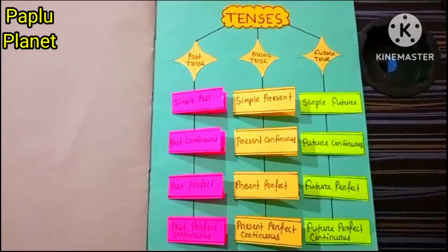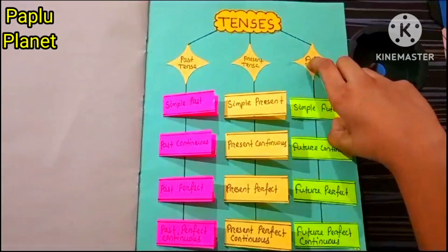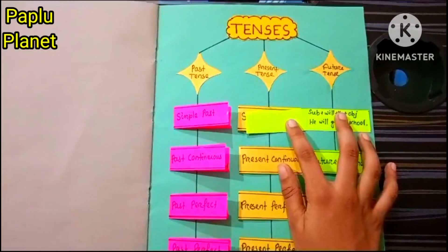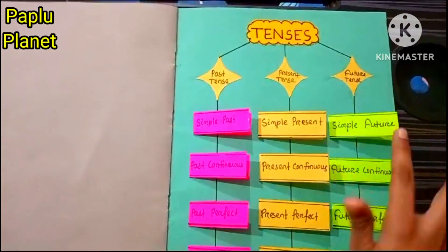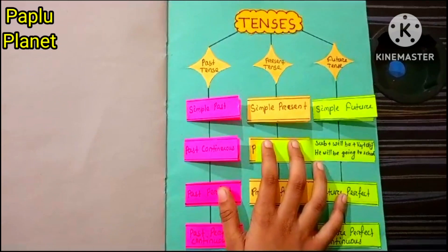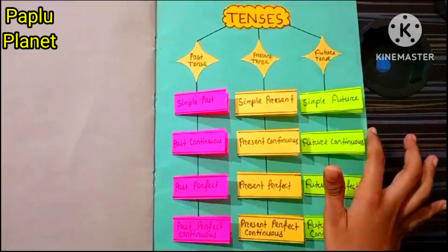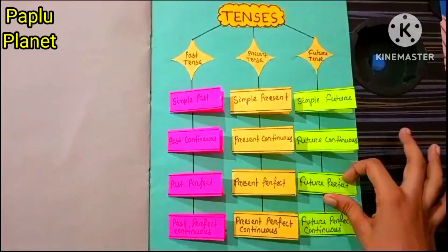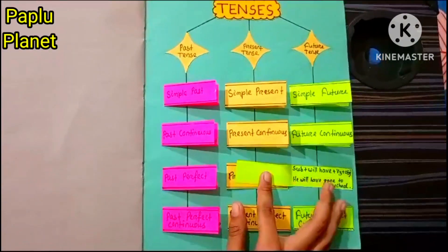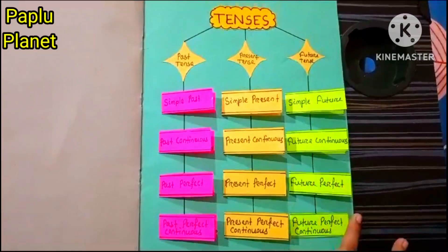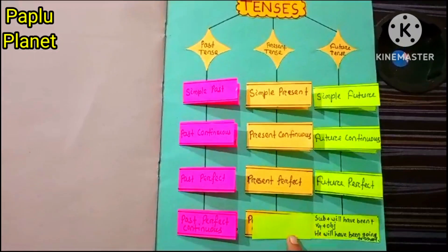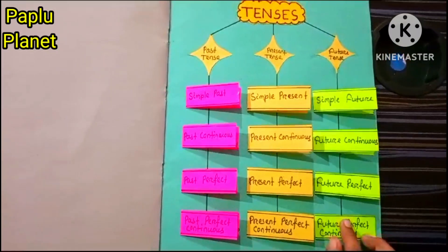Now let's start with the future tense. Simple future: subject + will + V1 + object. He will go to school. Future continuous: subject + will be + V4 + object. He will be going to school. Future perfect: subject + will have + V3 + object. He will have gone to school. Future perfect continuous: subject + will have been + V4 + object. He will have been going to school.